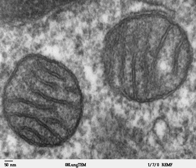Leonor Michaelis discovered that Janus green can be used as a supravital stain for mitochondria in 1900. In 1904, Friedrich Meves made the first recorded observation of mitochondria in plants in cells of the white waterlily, Nymphaea alba, and in 1908, along with Claudius Regaud, suggested that they contain proteins and lipids. Benjamin F. Kingsbury, in 1912, first related them with cell respiration, but almost exclusively based on morphological observations.